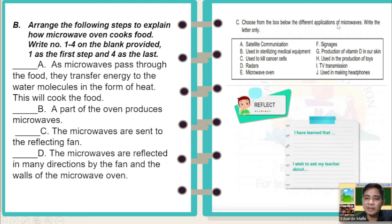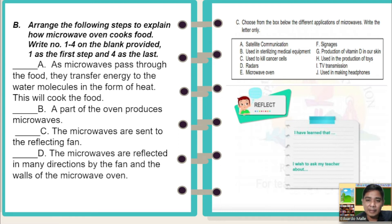Choose from the box below the different applications of microwaves — write the letter only. Options include: satellite communication, use in sterilizing medical equipment, use to kill cancer cells, radars, microwave oven, signages, production of vitamin D in our skin, use in the production of toys, TV transmission, and use in making headphones. You have to pick your answers.